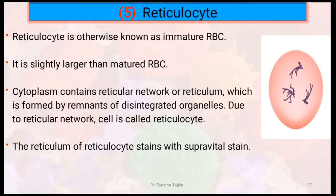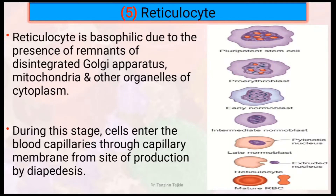Then, reticulocytes — another name is immature RBC. It is slightly larger than mature RBC. The cytoplasm contains a reticular network or reticulum, which is formed by remnants of disintegrated organelles. Due to this reticular network, the cell is called reticulocyte. The reticulum of reticulocyte is stained with supravital stain. Reticulocyte is basophilic due to the presence of remnants of disintegrated Golgi apparatus, mitochondria, and other organelles of the cytoplasm.